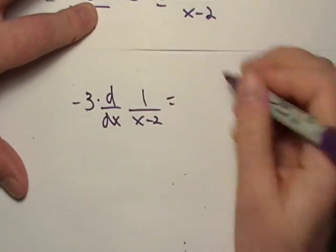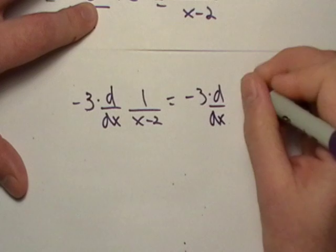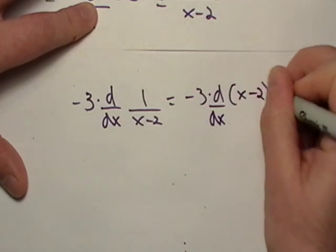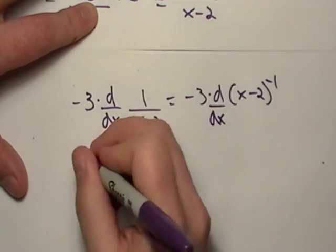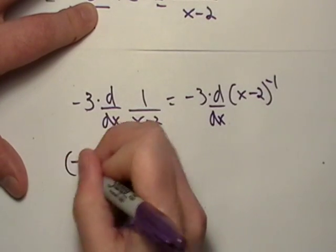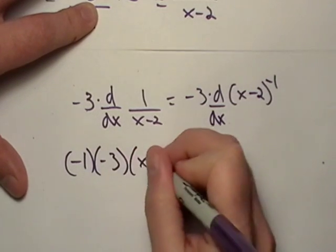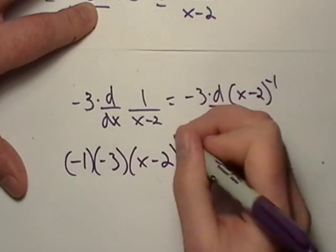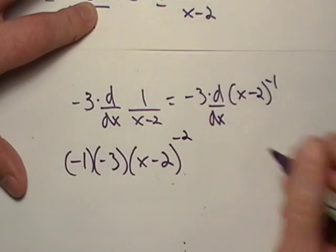Ok, well, we could actually just rewrite this again to the negative one. So let's just go ahead and we'll just take the negative one out. Negative three, x minus two. Don't forget about the little deal up there, that's negative two.